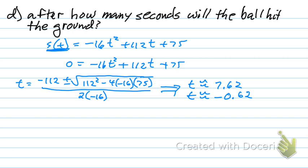Please notice that second one, the negative point point point two seconds. What does that mean? That means it was on the ground point six two seconds before we threw it. That doesn't make any sense in the context of this problem. So, we mark that one out.